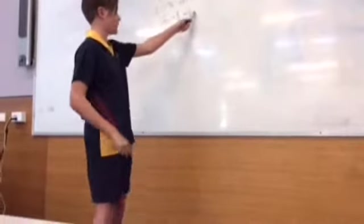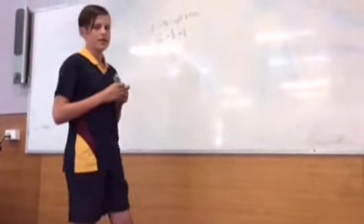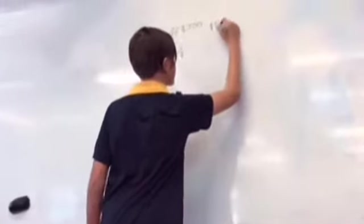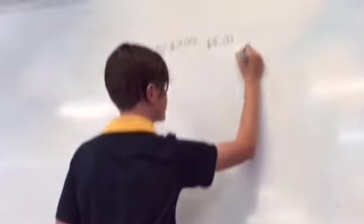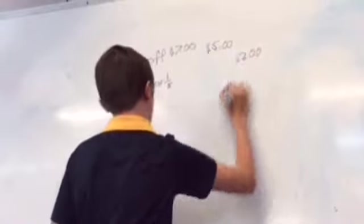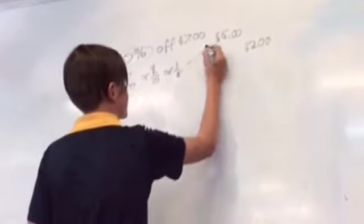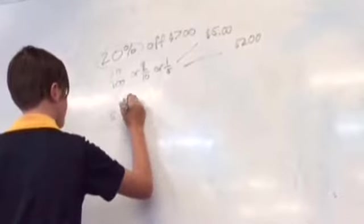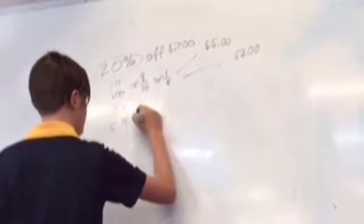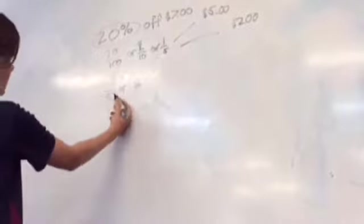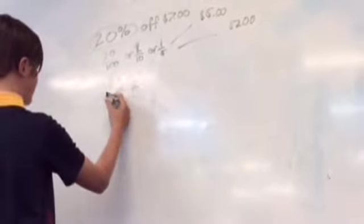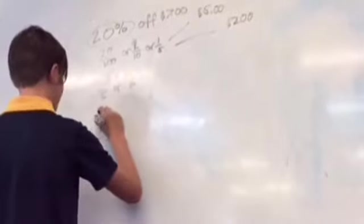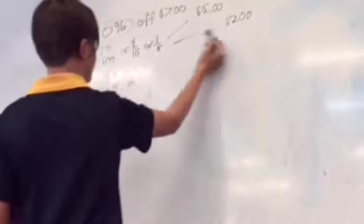So basically we need to find 1 fifth of $7. Now the easiest way to do this is to change $7 into $5 and $2, which is two completely different numbers in a way. So first up we need to find 1 fifth of $5 and then we'll do 1 fifth of $2.